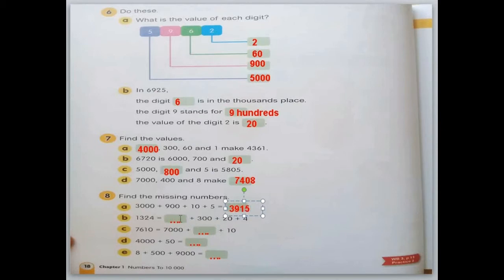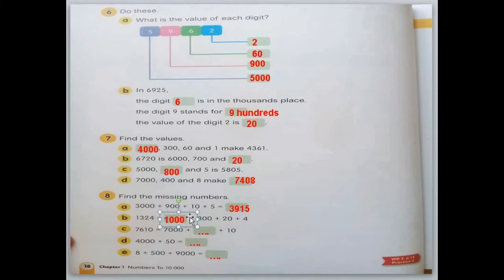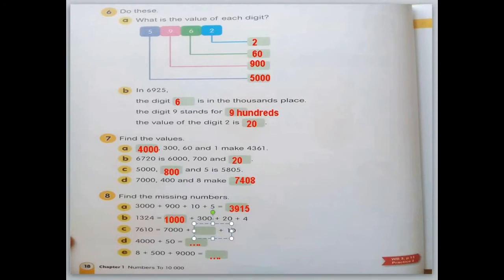What number is missing? You have 3, 2, 4 — over here also 3, 2, 4. There is 1, but the value of 1 is a thousand. Next question C: 7,610 — you have 7,000 here and 10 here, the number that is missing is 600.